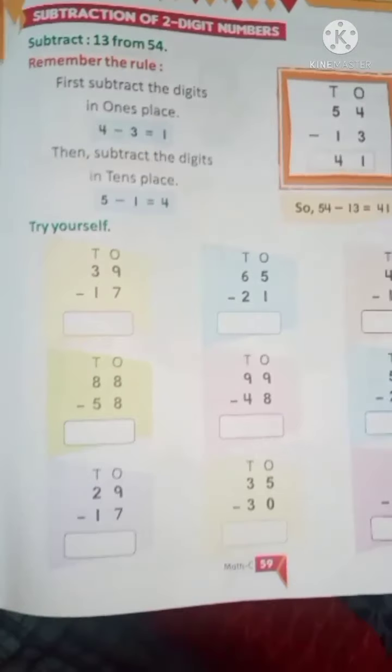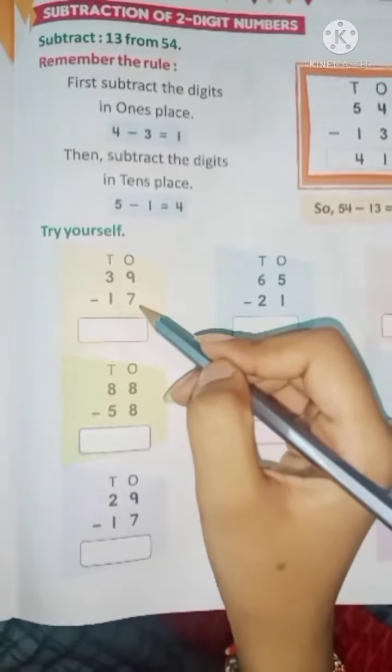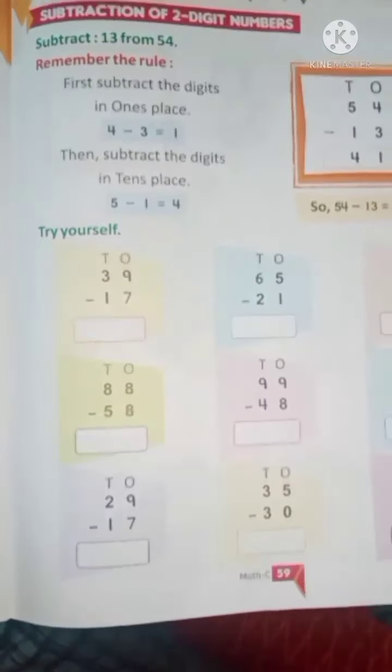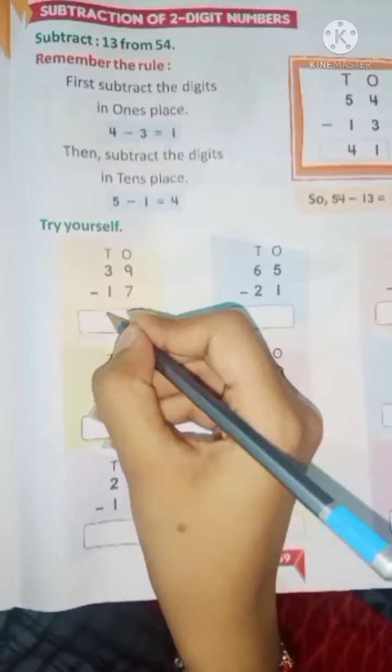Same like this. You have to try yourself. 39 minus 17. So, 9 minus 7 is? 9 minus 7 is 2. And 3 minus 1 is again 2.